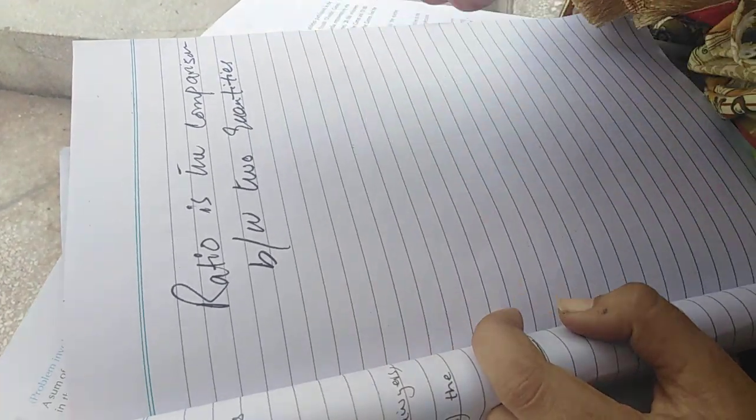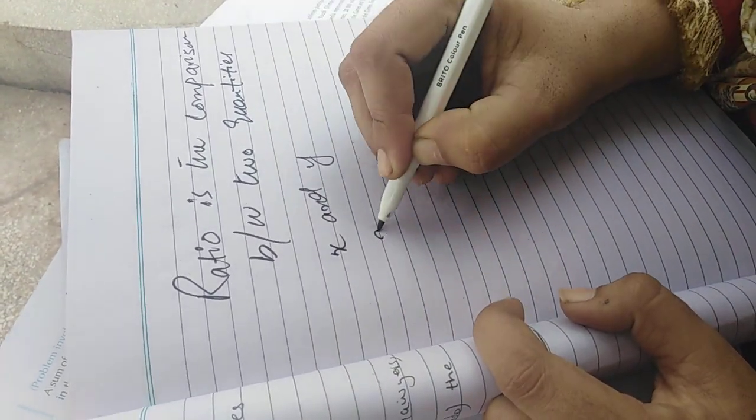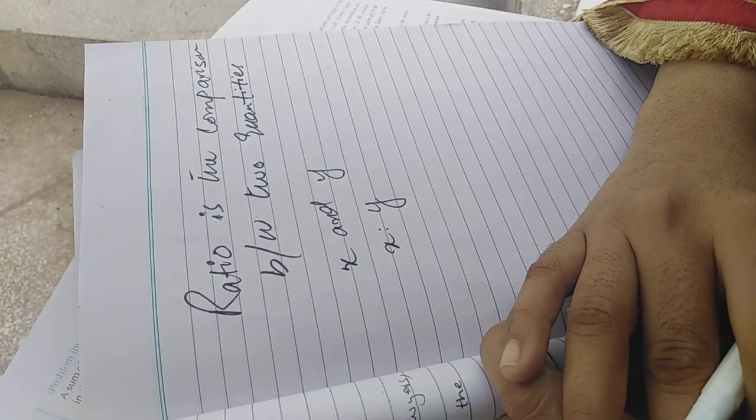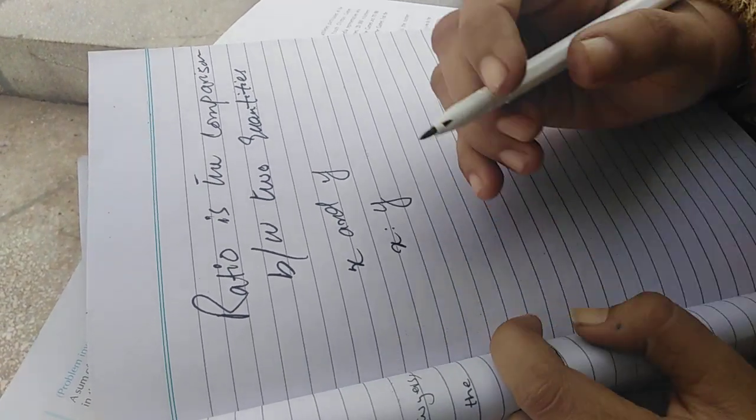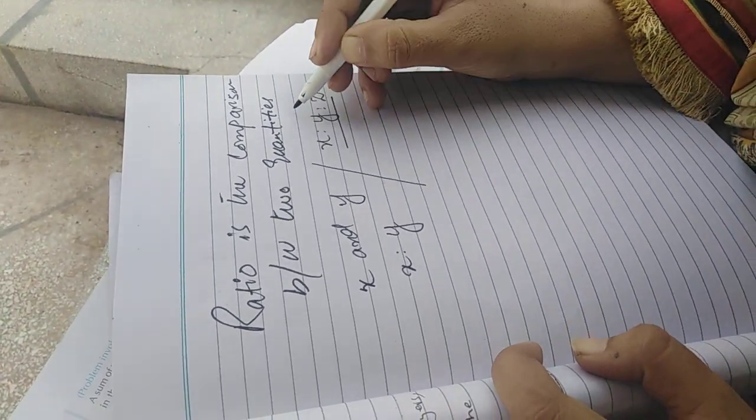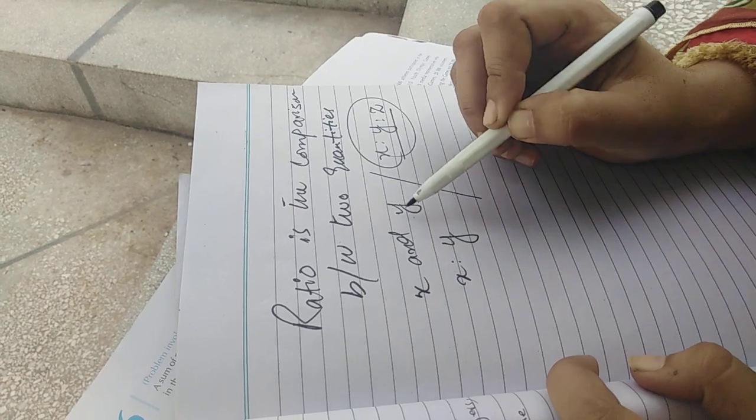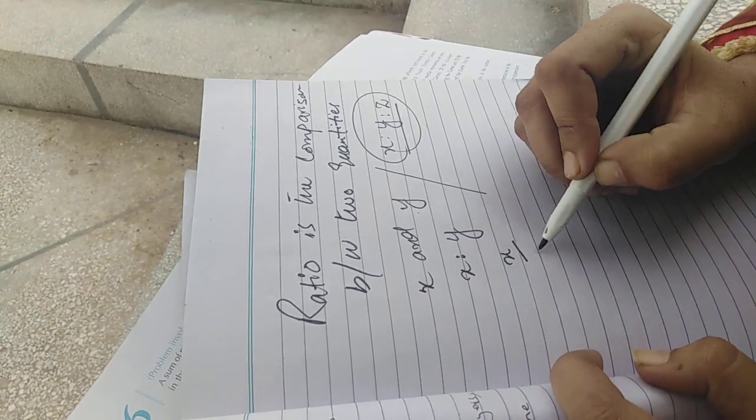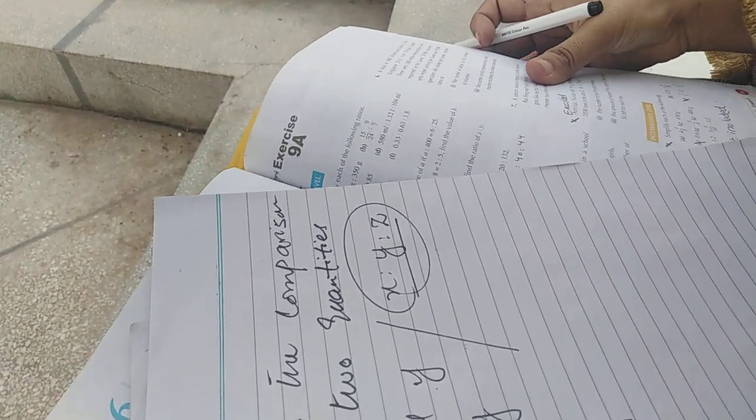If we denote two quantities with x and y, we write it as x ratio y. Ratio can be used to compare two, three, or more quantities, but we can only write two quantities in the form of a fraction: x over y. Now the first part is we have to simplify the following ratios.